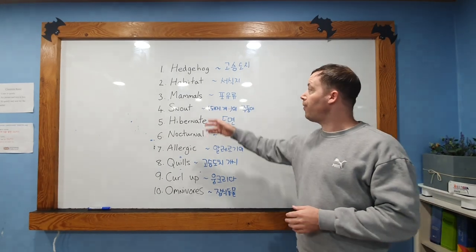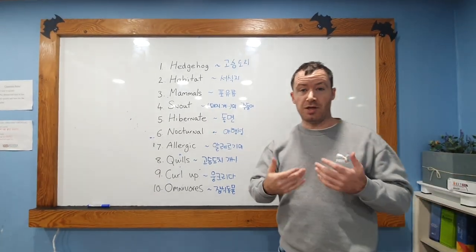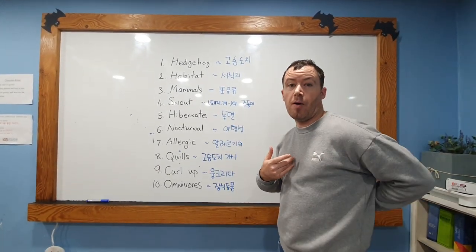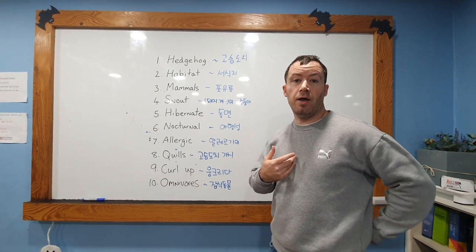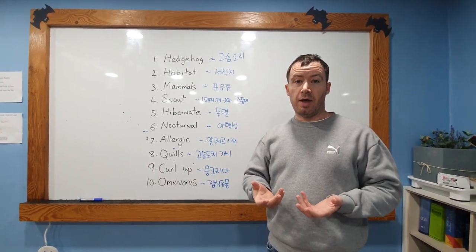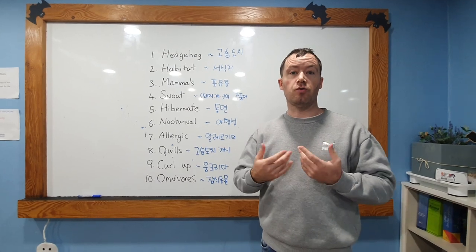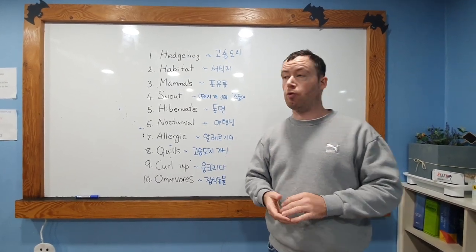Hedgehogs are mammals, which means they're like us. They have a backbone, a spine, and they breathe. They normally have hair and they produce milk. The females produce milk.